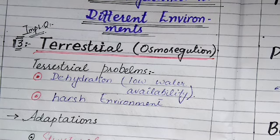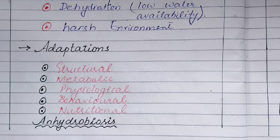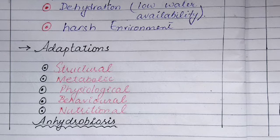We will talk about adaptations in five ways. These are: structurally, metabolically, physiologically, behaviourally, and nutritionally — and the last term is anhydrobiosis. We will discuss them one by one.